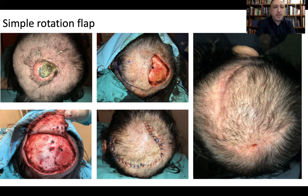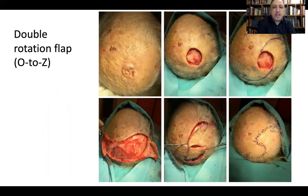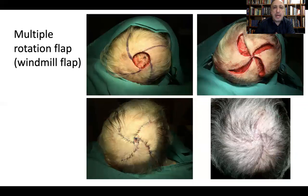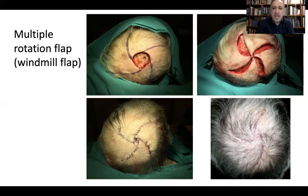When one rotation flap is not sufficient, we can combine two flaps in an O-to-Z fashion, moving one flap up to the other and closing the wound with a Z-shaped scar. If two flaps are not sufficient, we can place three, four, or even five — depending on the size of the defect — in a windmill pattern. This windmill flap, which is a multiple rotation flap, is quite useful for medium to large defects and works like the diaphragm of a photographic camera.